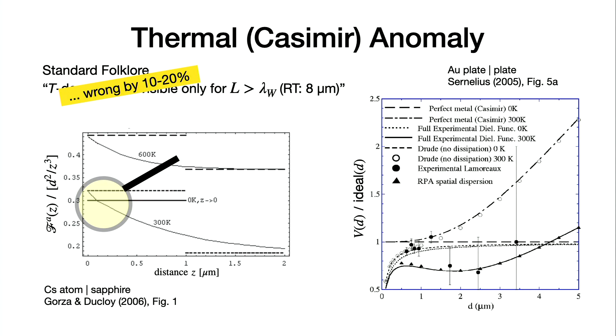This anomaly arises because the normal expectation you have is that these thermal effects are a small correction to vacuum effects that appear at short distances, high frequencies. Normally only the Wien wavelength here, 8 micron or so, is giving you the length scale where these effects enter the game. They have been observed at shorter distances. Here are two plots with examples.